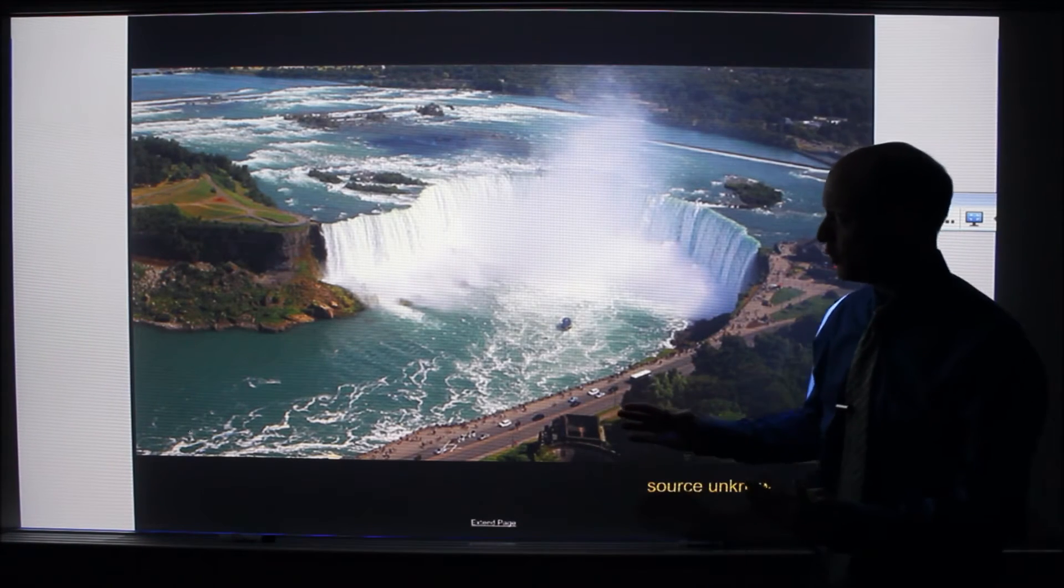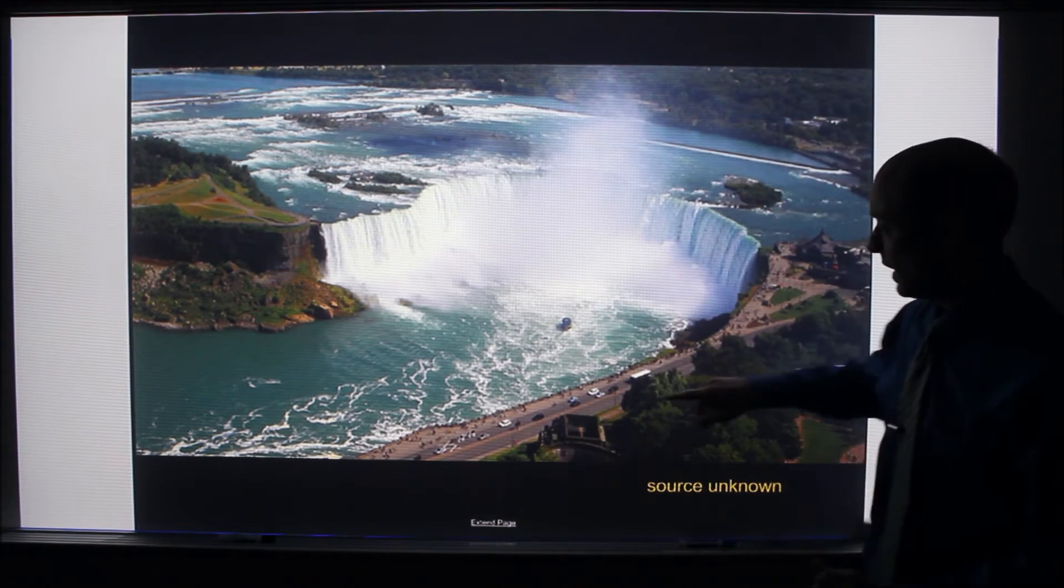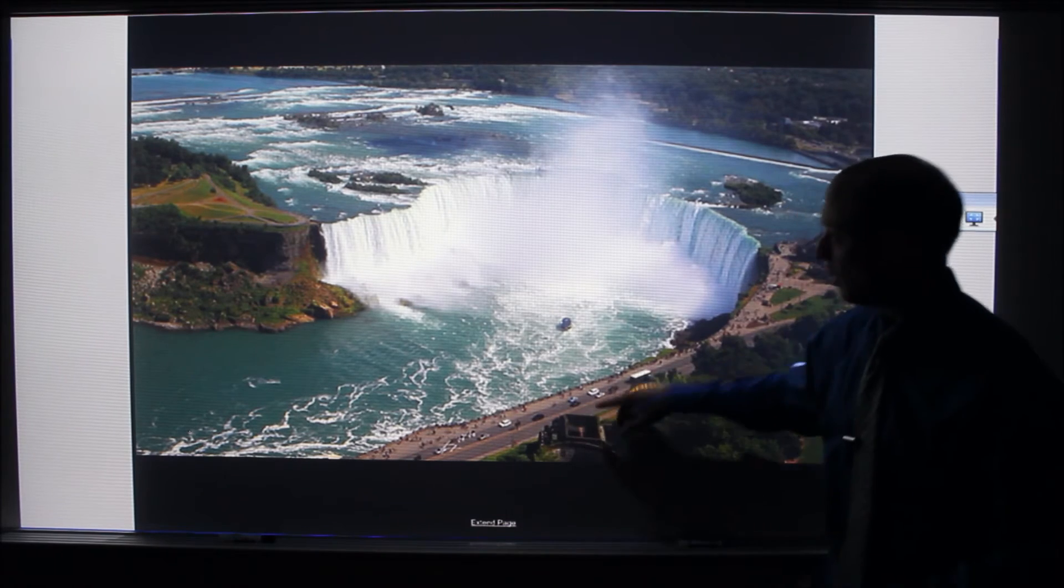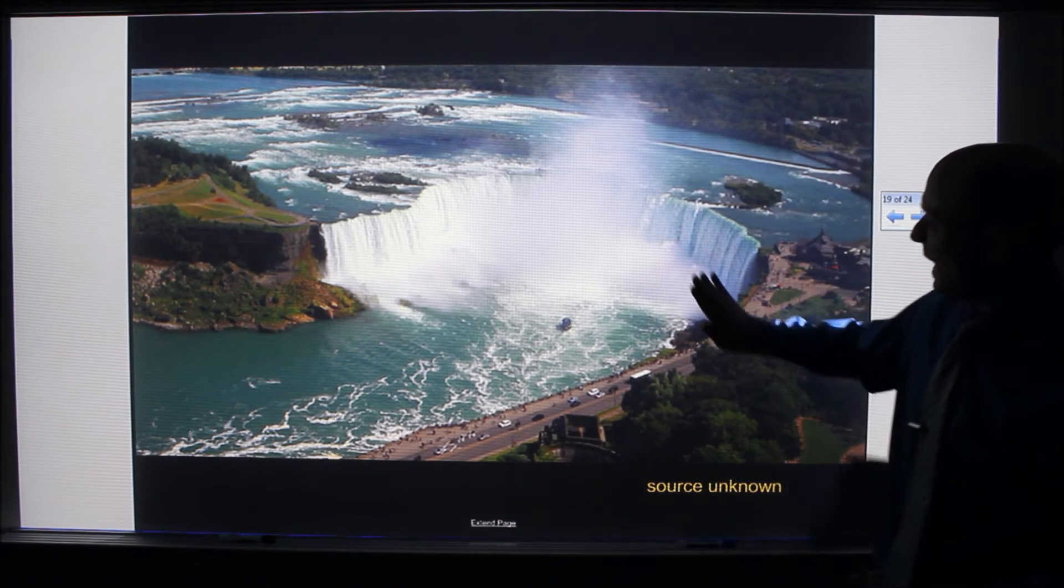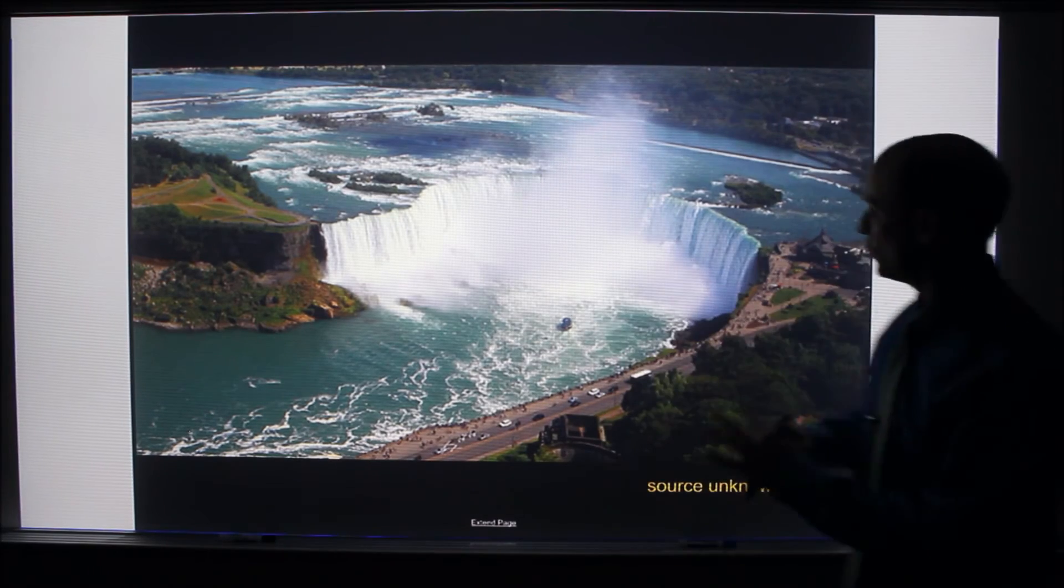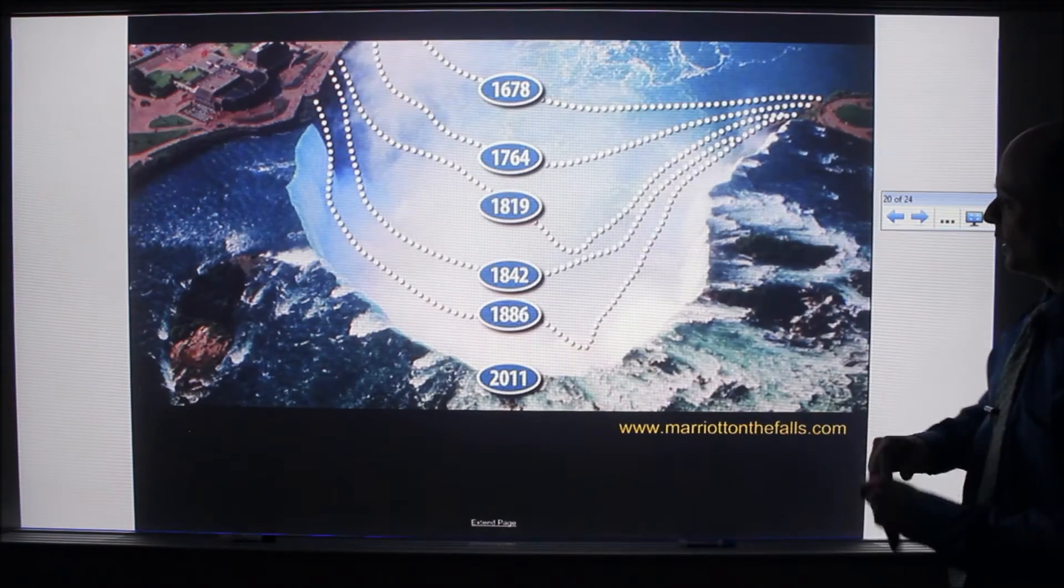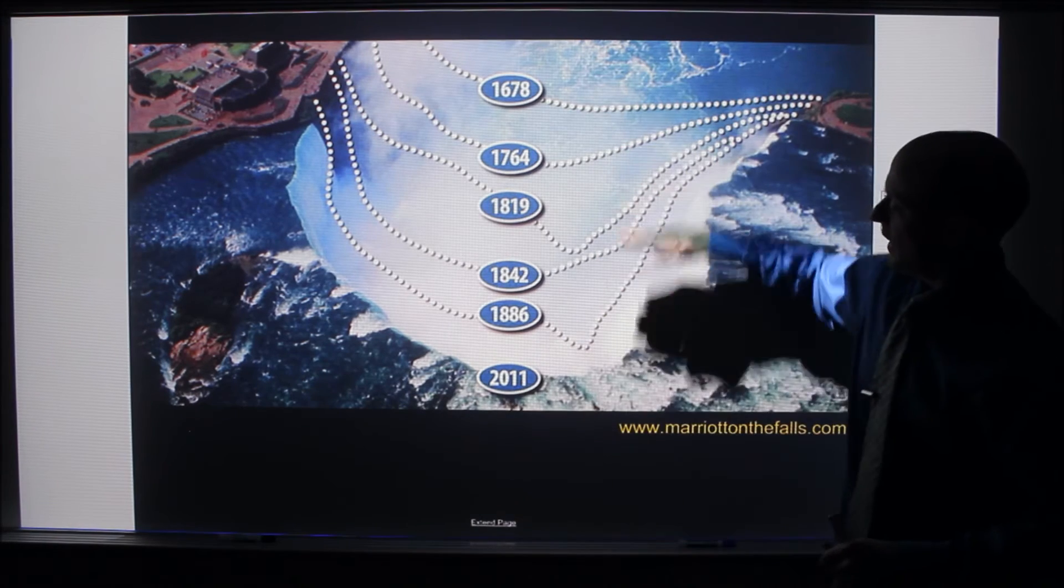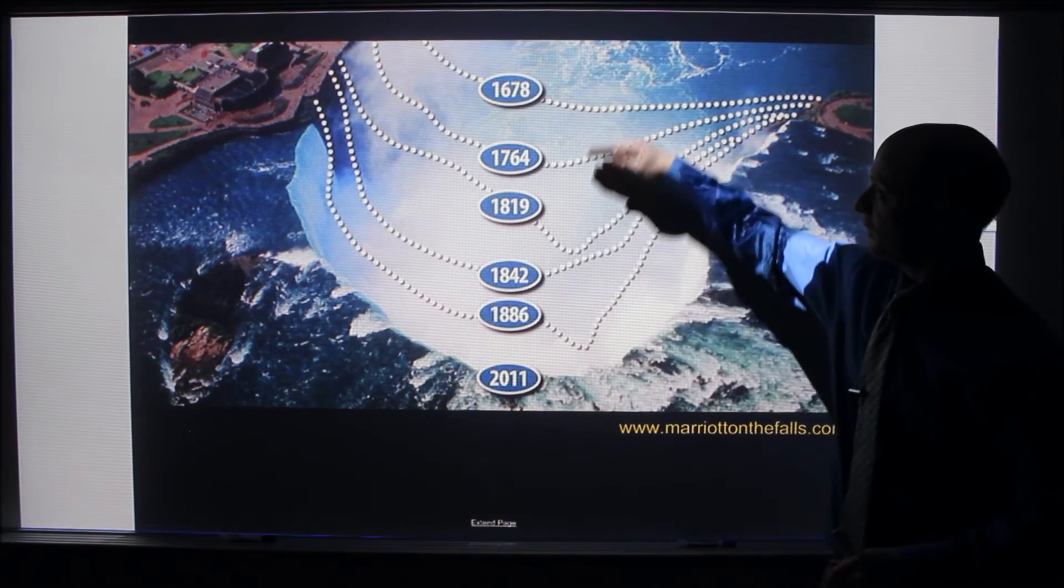Okay so here this is Horseshoe Falls, Niagara Falls, sort of overhead view. Here's a boat here for scale. These are cars so you get a sense of the scale here. And this is continuing to erode upstream this way. If you look at this picture here, this is sort of an overhead view of the falls right here. And it shows where the falls were during these years.